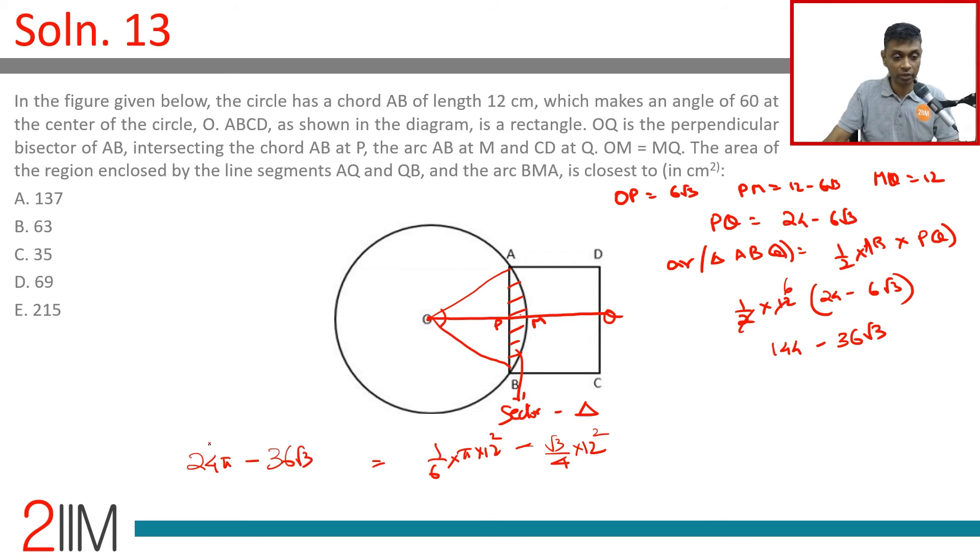We need to subtract this number from this number: 144 minus 24 pi minus 36 root 3. This disappears completely. We're left with 144 minus 24 pi, or extract the 24 out.